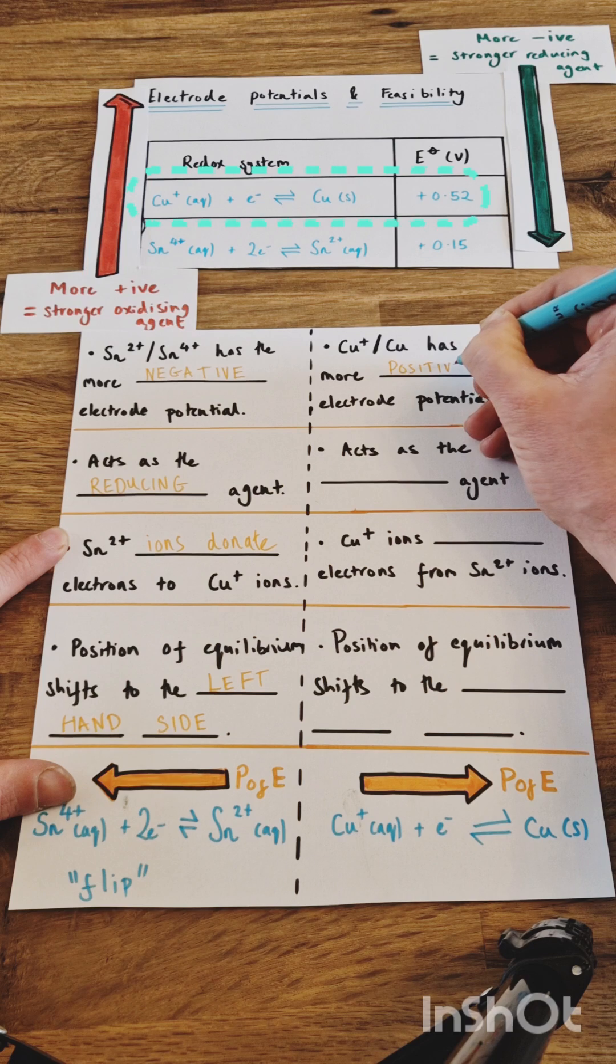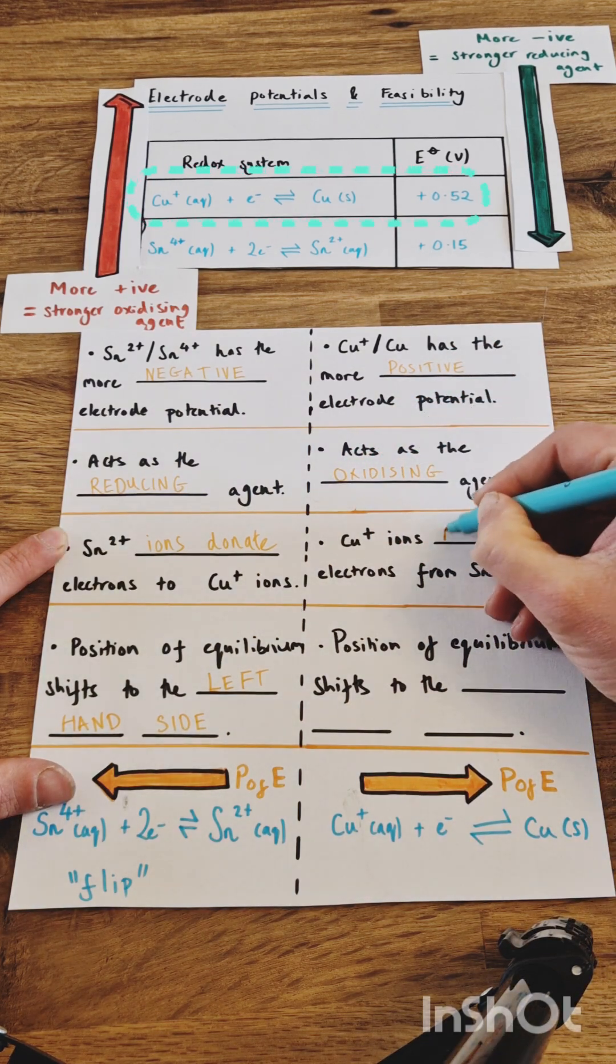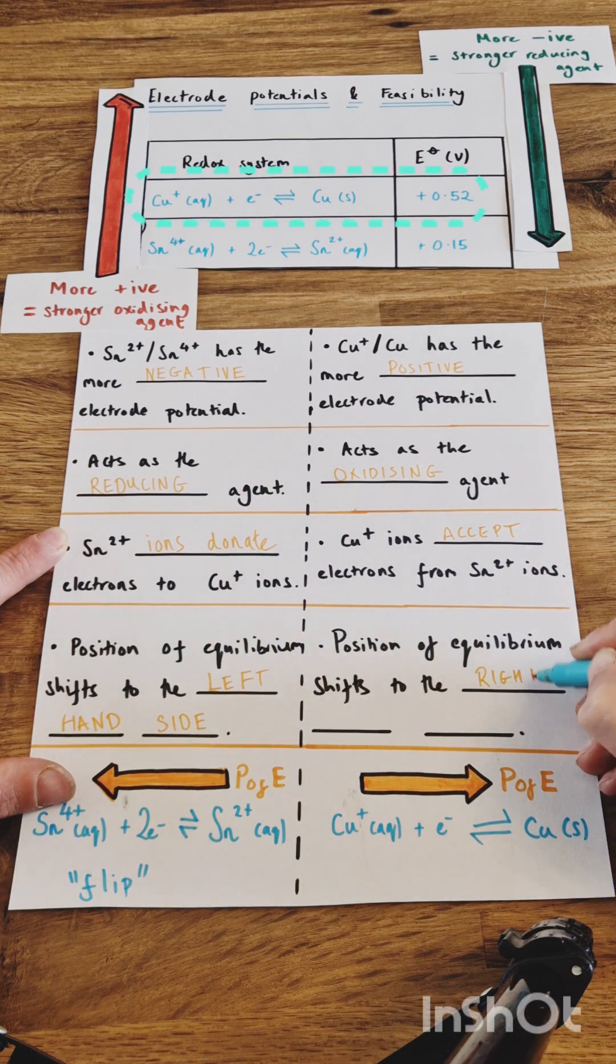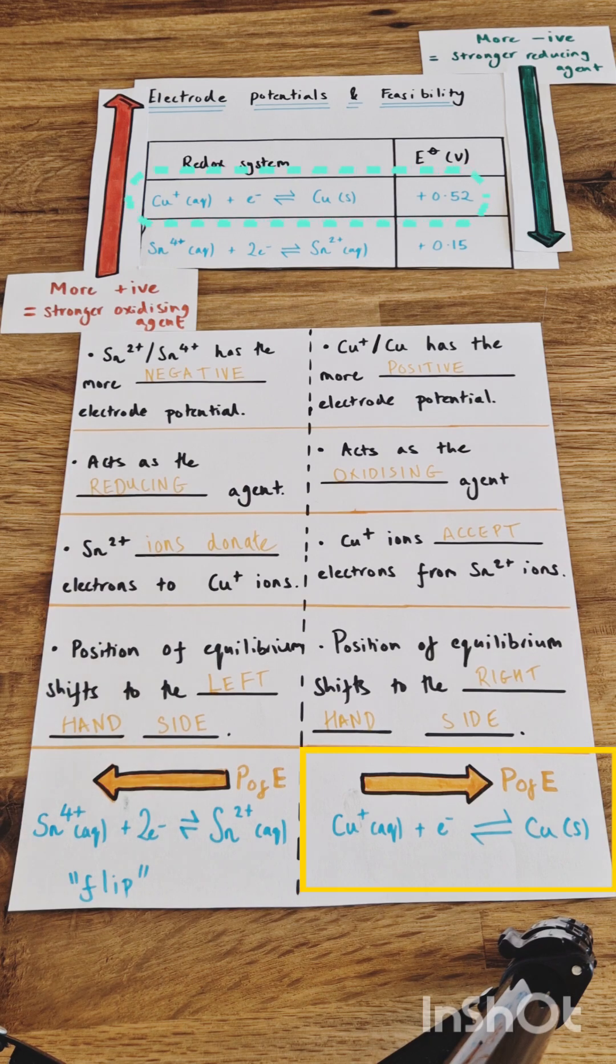On the other hand, the Cu+ to Cu system has the more positive electropotential and should be acting as the oxidizing agent. So the copper ion should be receiving or accepting electrons from the Sn2+ ions. Therefore, we need to move the position of equilibrium to the right hand side to represent this behaving as an oxidizing agent.